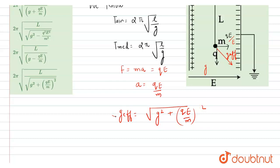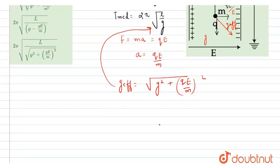Now use this formula and put this value in this equation. So we get time period as T equals 2π√(L/g effective), where g effective is √(g² + (qE/m)²). So it is our required time period.